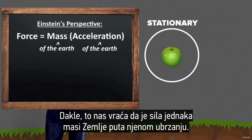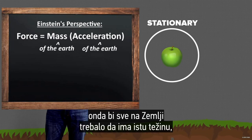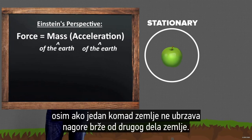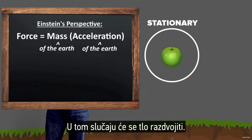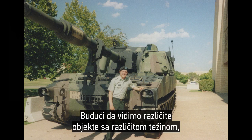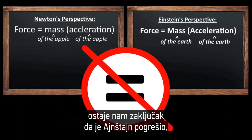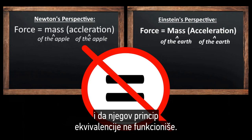That brings us back to force equals the mass of the earth times the acceleration of the earth. And if that is the case, then everything on earth should weigh the same amount, unless one patch of ground is accelerating upward faster than another, in which case it would divide asunder. Since we see different objects weighing different amounts, and we clearly do not see the earth splitting apart, we are left with the conclusion that Einstein was wrong, and that his equivalence principle does not equate.